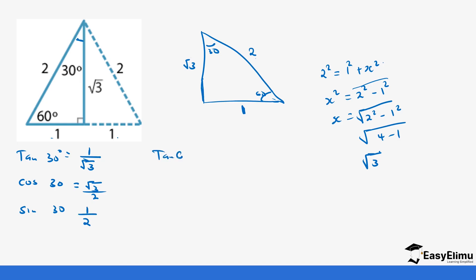And then tan 60 is going to be opposite, which is root 3 over adjacent, which is 1. Then cos 60, we have changed to 60 degrees, it's going to be adjacent, which is 1 over hypotenuse 2. And then sin 60, which is going to be opposite, which is root 3 over hypotenuse 2. So those are the values, as you can see, I've projected them.